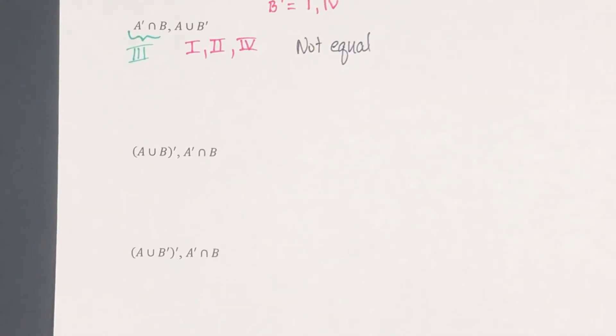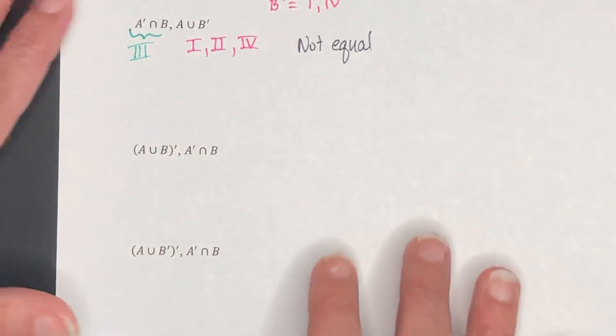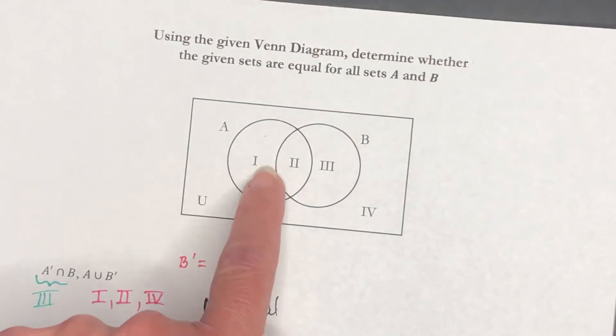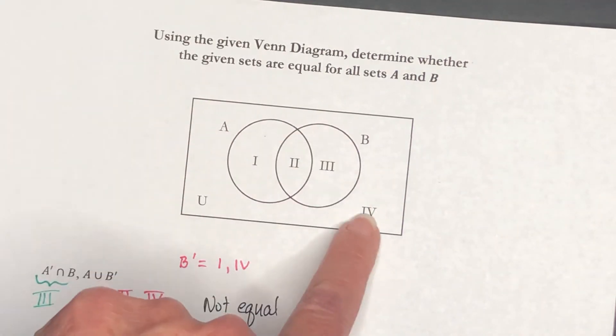Okay, so let's go on here. A union B, in parentheses, complement. Okay, so A union B is going to be picking up everything that is in these two circles. So it's going to pick up 1, 2, and 3. And then if we're asked for the complement of that, that's simply going to be region 4.